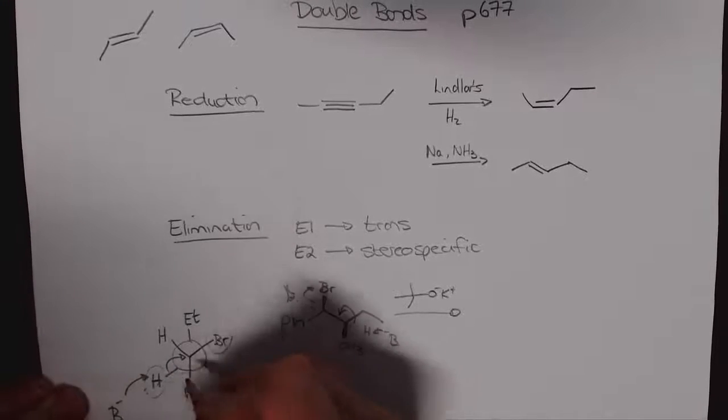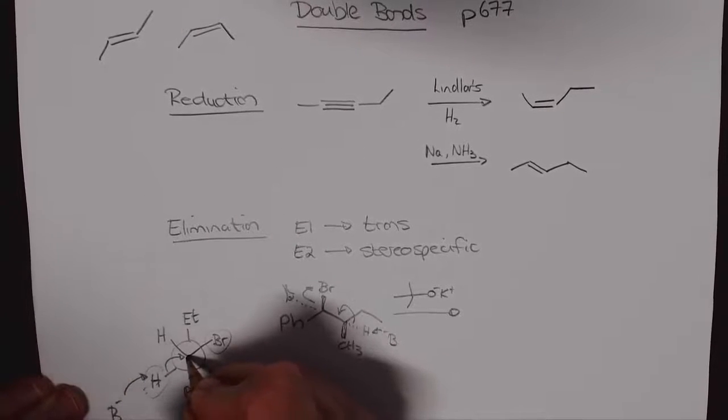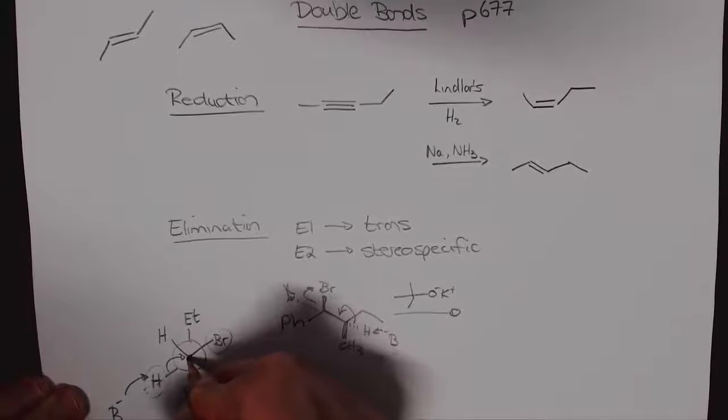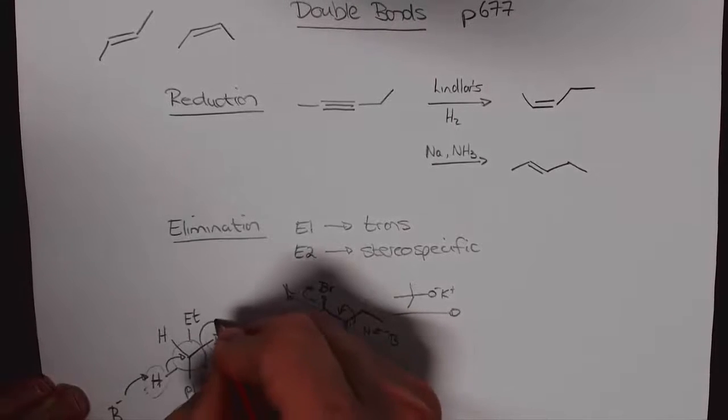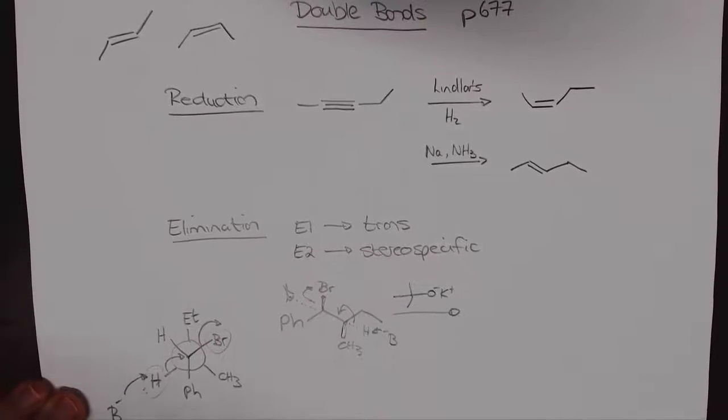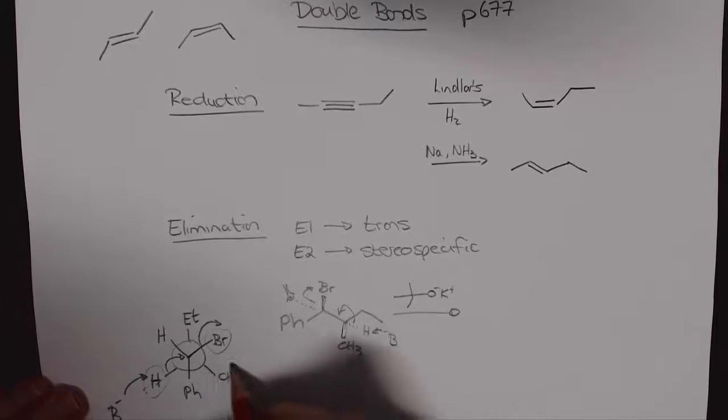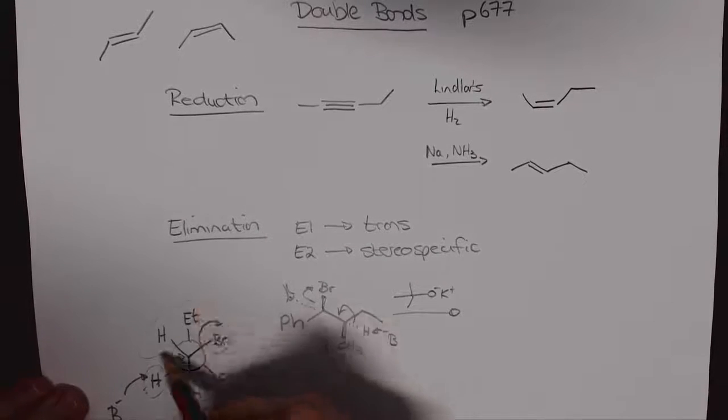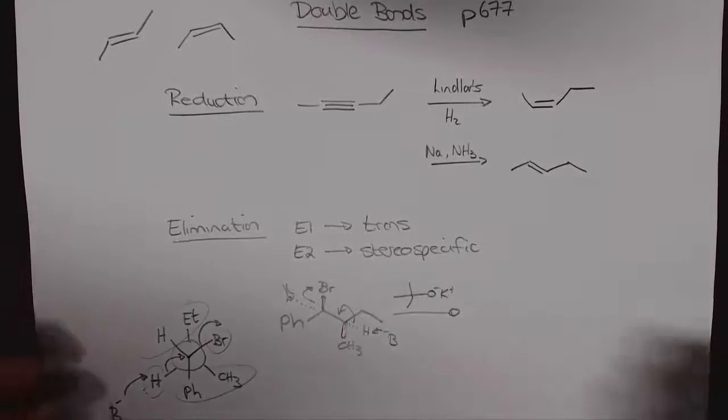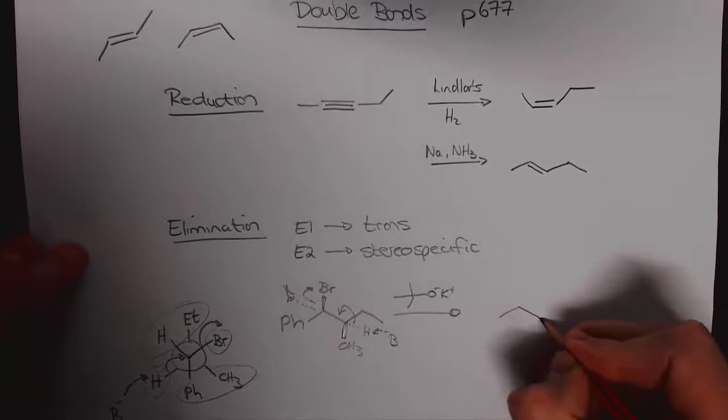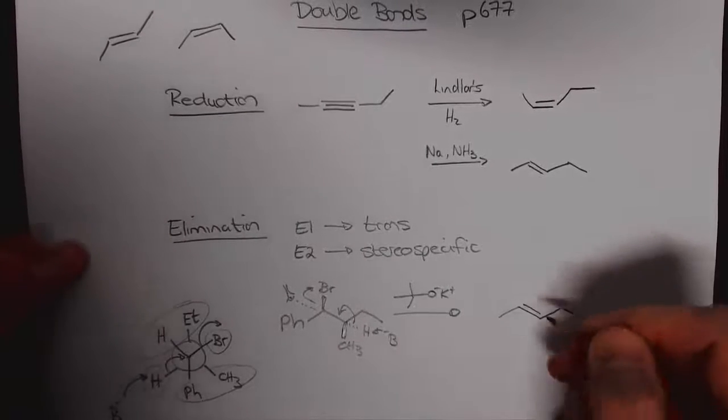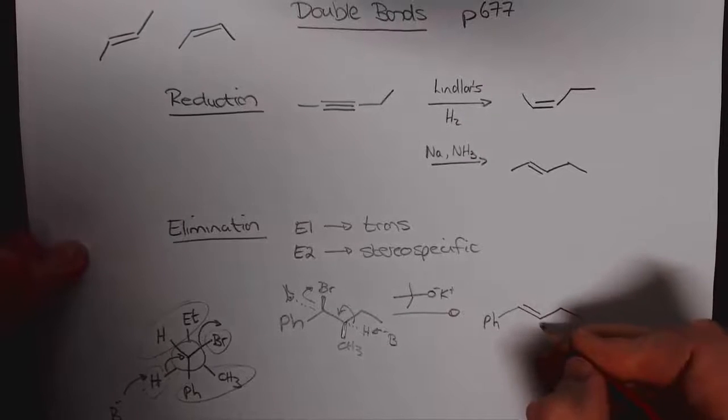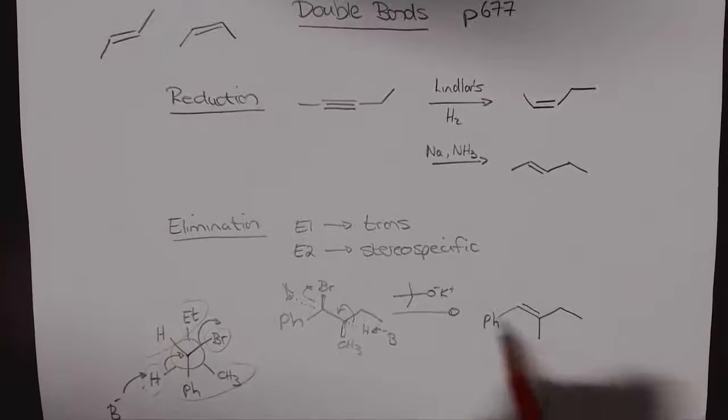So the base can come pick up that proton, this one goes in, forms the double bond between the carbon in the front and the carbon at the back and this leaves over there. So that means that the phenyl and the CH3 on the same side and the proton and the ethyl group on the same side. When we draw out our product it just so happens to work out that it looks like pretty much like the starting material.